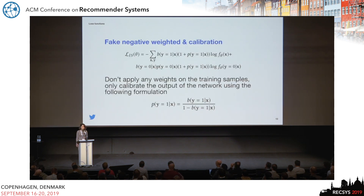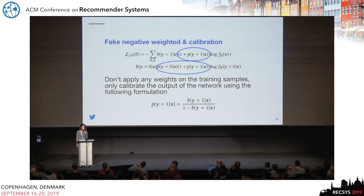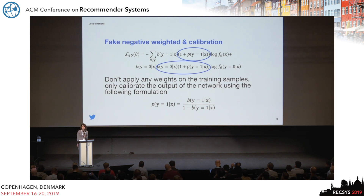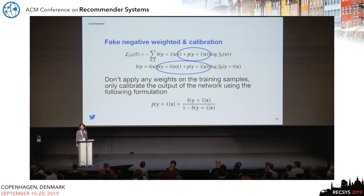For the two approaches that rely on importance sampling: first, the fake-negative weighted loss uses the model estimate — the model output — as importance weights, which are considered constant at training time. It upweights positive examples and downweights negative examples with a term proportional to the model's prediction of how likely a user is to engage with an ad. For the fake-negative calibration approach, we don't apply any weights on the training samples, but rather transform the output of the network based on a formulation derived from importance sampling. For exact derivations, we refer the audience to our paper.